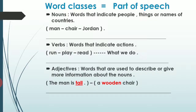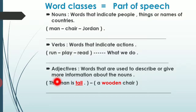The adjectives أو الصفات are words that are used to describe or to give more information about nouns. فبنستخدم الصفات لحتى نوصف الأسماء أو لحتى نعطي معلومات إضافية عنها. Like when we say the man is tall — here we give more information about the man that he is tall — or a wooden chair.